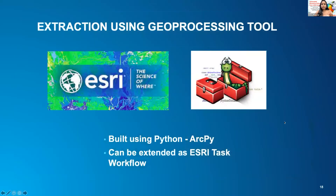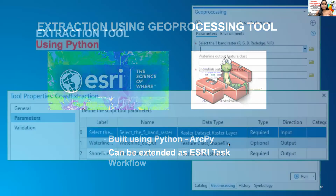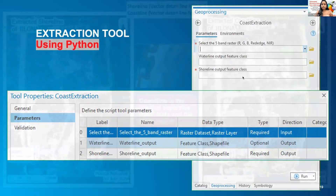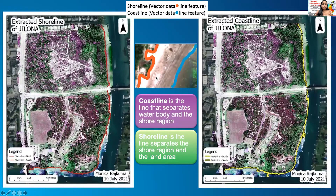The above-mentioned steps are put together using ArcPy in order to build a geoprocessing tool in ArcGIS Pro. This is the developed geoprocessing tool for the shoreline extraction, which takes a five-band raster as input and we have to give the output path for coastline and the shoreline. Coastline is the line that separates the water and the shore, whereas the shoreline is the line that separates the shore and the land. This is the output of shoreline and coastline from the developed geoprocessing tool.